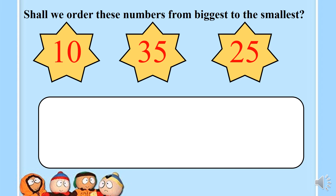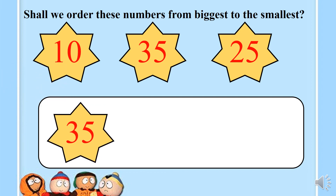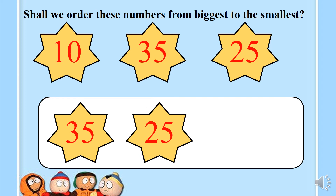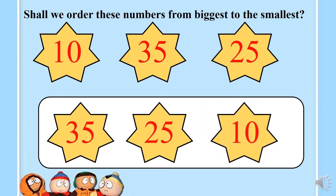This one is for you to do. You have to find the biggest number first and put it in the first place, and then go on until you reach the smallest number. So the biggest number is 35. The next big one would be 25. And what is the smallest number out of all of these? It's number 10. We have ordered starting from the biggest to the smallest — this is how we order numbers.